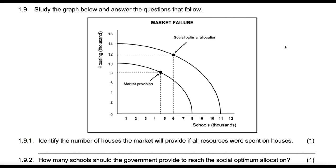Each number on the graph represents a thousand — so one thousand, two thousand, three thousand, and so on. This point here is the social optimal allocation.